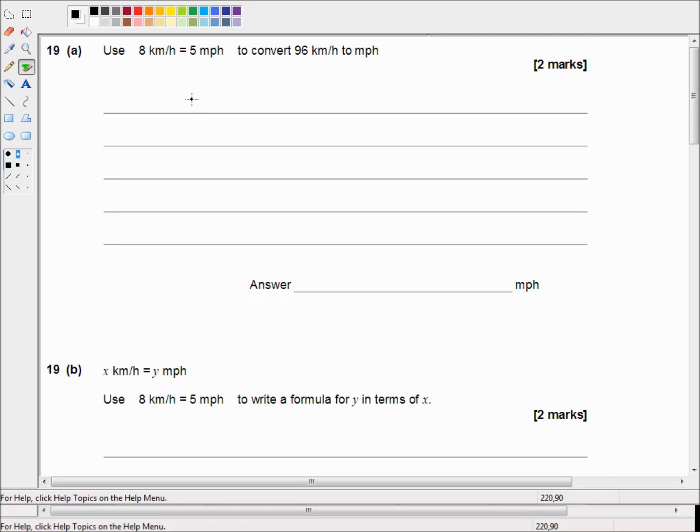It's the first paper in the foundation tier and we're picking up in question 19. It says use 8 kilometers per hour equals 5 miles per hour to convert 96 kilometers per hour to miles per hour.